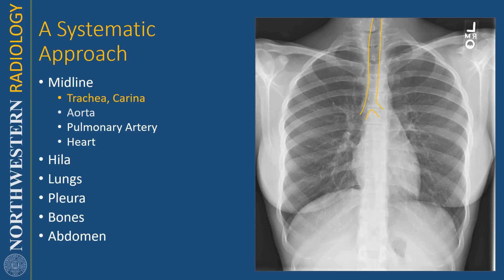Now that you know the anatomy of the mediastinum a little bit better, I want to talk about how I personally look at chest radiographs. The way I look at it is actually the way that we just reviewed the anatomy — I start from the midline structures and then go out from there. So the first thing I do is look at the trachea and make sure I see its normal deviation slightly to the right because of the aortic arch. Then I look at the airways and the right and left main stem bronchi, then move on to the aorta.